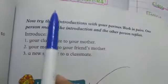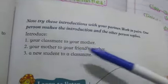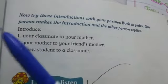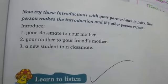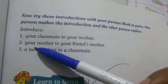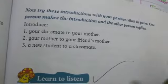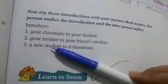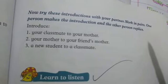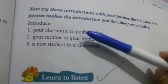Workbook page number 59 پہ — 'Now try these introductions with your partner.' جیسے آپ نے سیکھا ہے اسی طرح آپ نے یہاں پہ اپنے pairs بنانے ہیں — گھر میں بھی اپنے mother یا کسی کے ساتھ بھی۔ جیسے your classmate to your mother، your mother to your friend's mother، اور our new student to our classmate۔ اسی طرح آپ نے ایک دوسرے کا introduction کرانا ہے۔